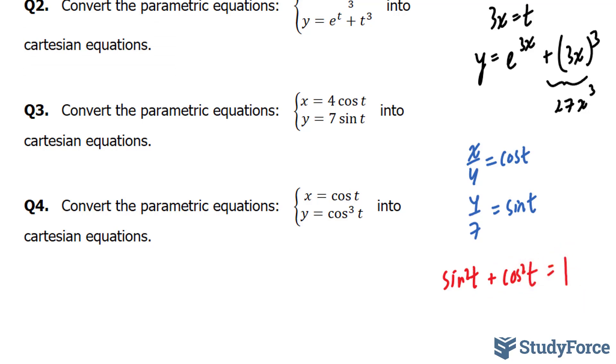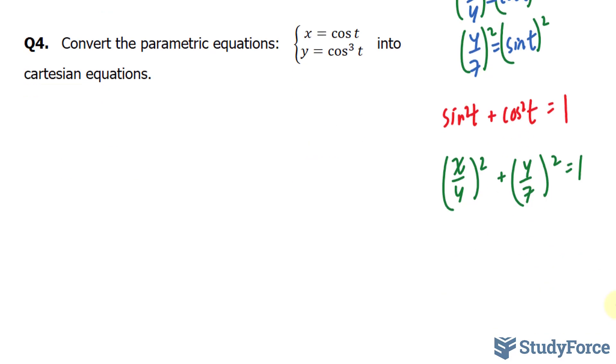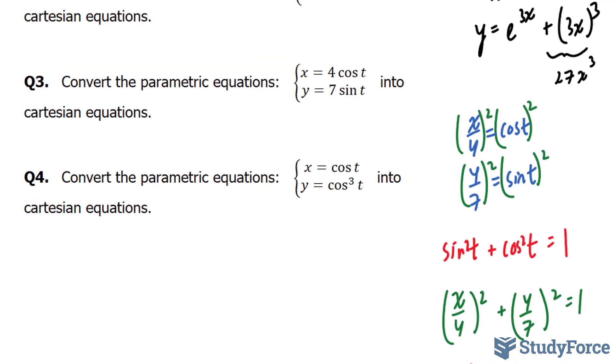So if I square this equation, the left and the right side, and I add up cosine squared t with sine squared t, I'll end up with 1. So I have x over 4 to the power of 2 plus y over 7 to the power of 2 is equal to 1. And this formula is interesting because it actually is an ellipse. If I expand this, I end up with x squared over 16 plus y squared over 49 is equal to 1. And this equation right here is the Cartesian equation equivalent of these two.